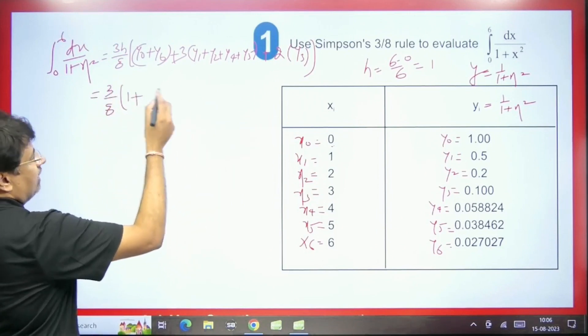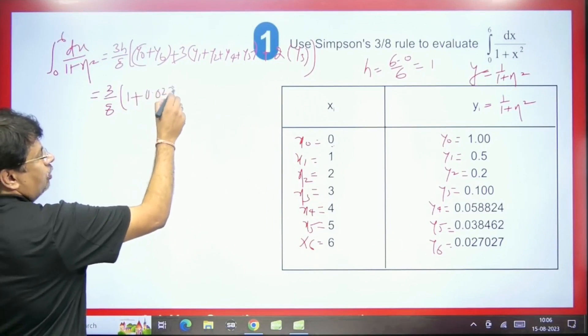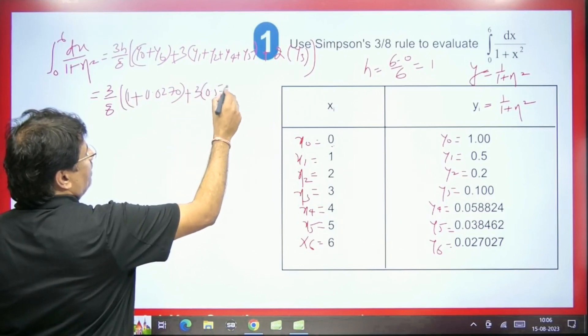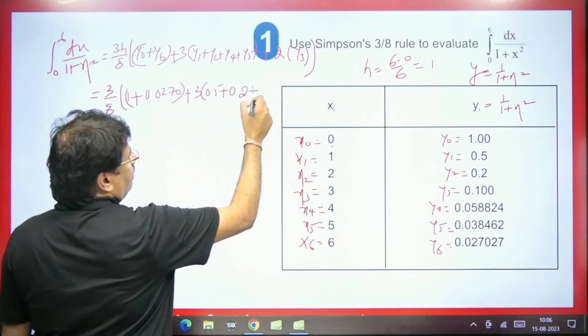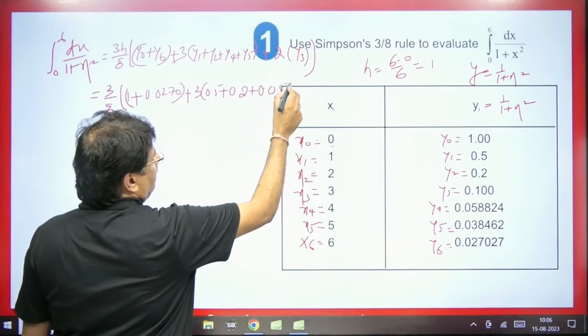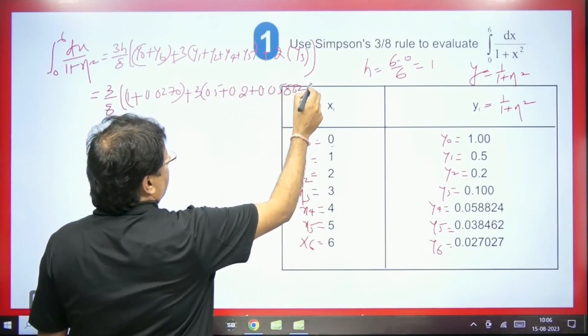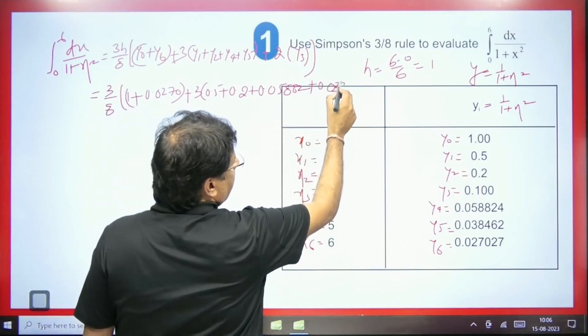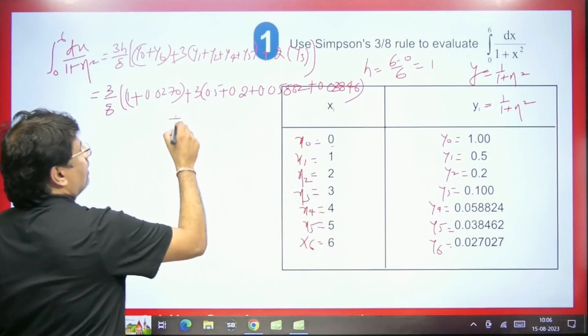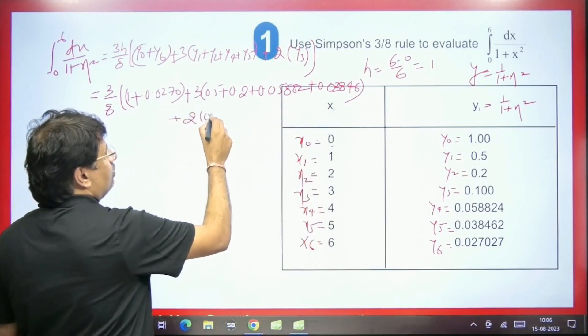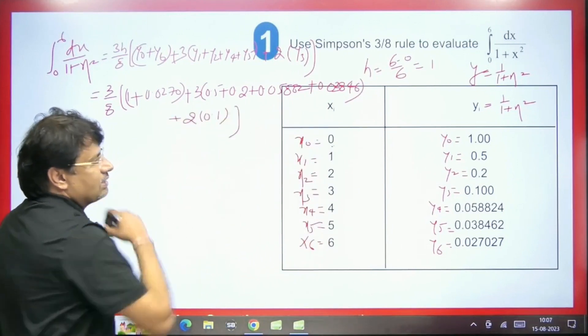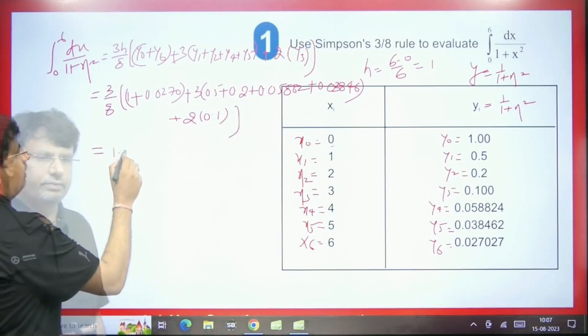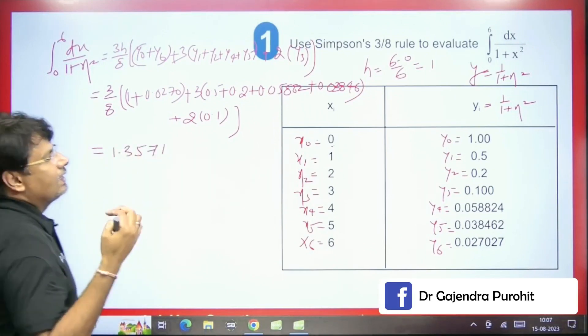Now students, y0, we have y0 as 1 and y6 will be 0.0270. And plus 3 into y1, the value we have is 0.5 and the value of y2 that we have is 0.2. The value of y4 is 0.0582 and the value of y5 is 0.03846. And here it will be 2 into y3, which is 0.1. So we will solve this with the help of calculator. Then the answer we will get will be 1.3571. This is the value of its integration. So we can do this in this manner.